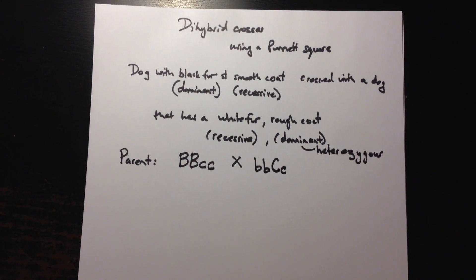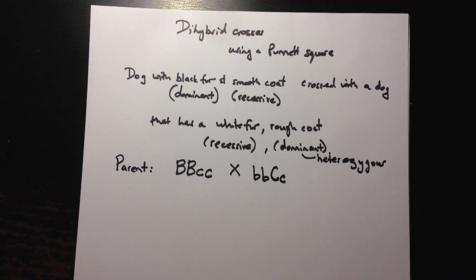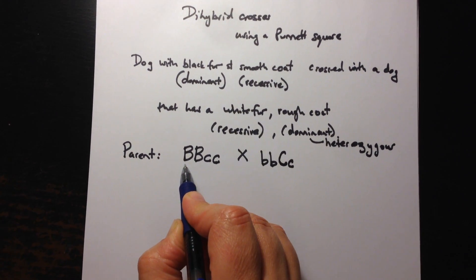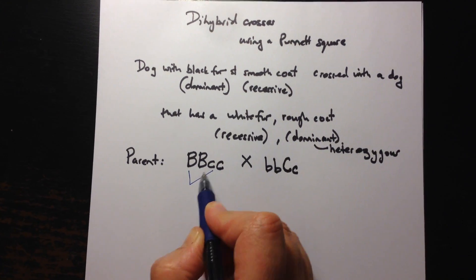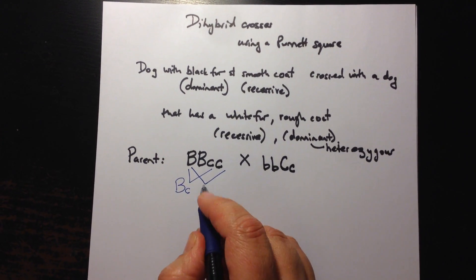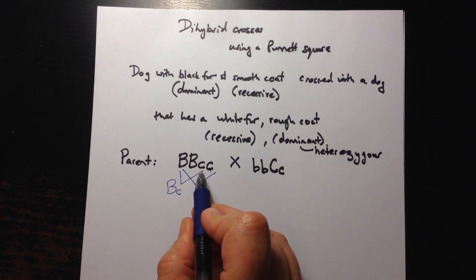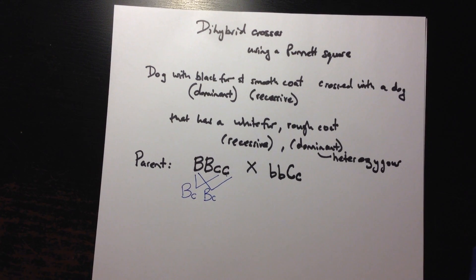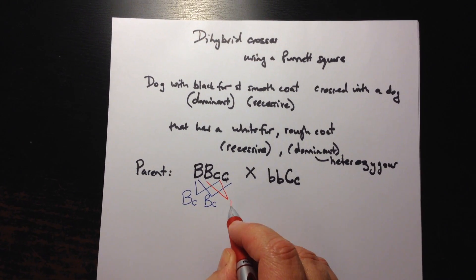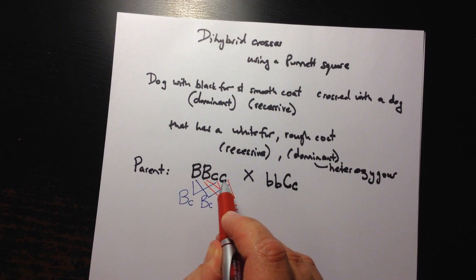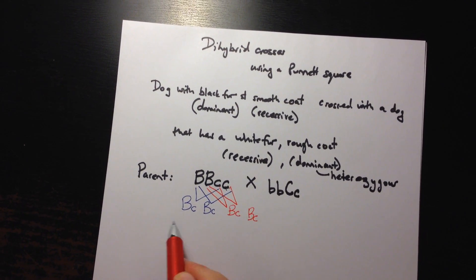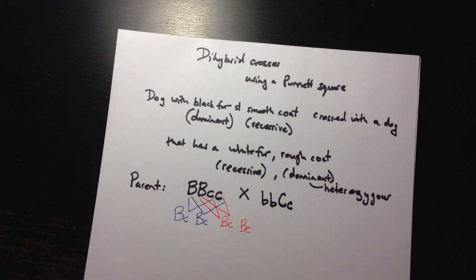The easiest way to set up the gametes for the big Punnett square is to use the following trick. You start with big B and cross it with little c — that is your first gamete. Then take that same big B and cross it with the second of that genotype pair, giving you another big C, little c. You take the second big B, combine it with little c, and then big B with little c. In this case, all the gametes are going to be the same.